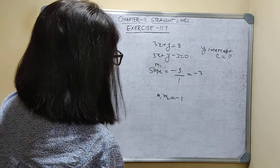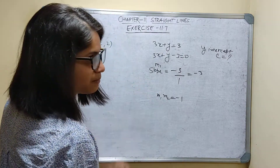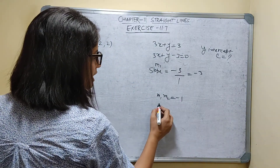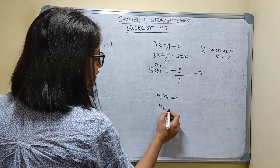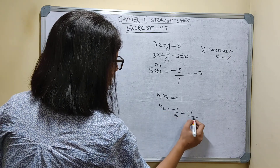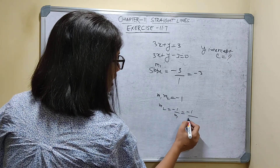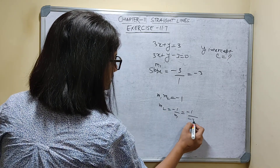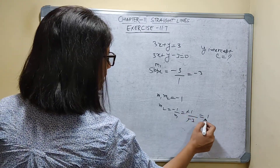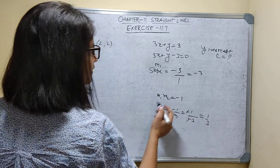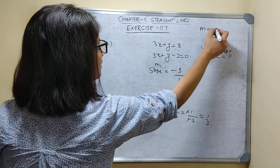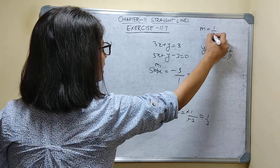If the required line and this line are perpendicular, then M1 × M2 = -1. So M2 = -1 upon M1 = -1 upon -3. The minus signs cancel, so M2 = 1/3. Therefore, the required line slope is 1/3.